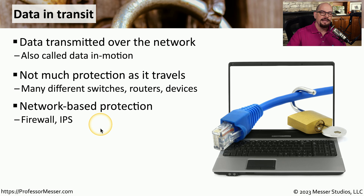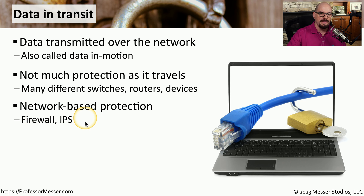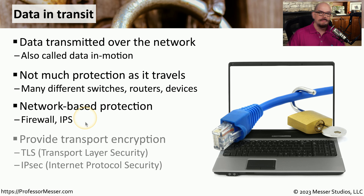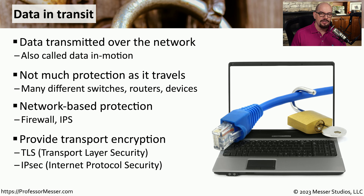One way to protect data in transit is to use a firewall or an intrusion prevention system. This allows you to set policies that allow all good traffic to pass through but prevent anything unknown or unusual from traversing the network. If you'd like to add additional security to data in transit, you can take advantage of encryption technologies.